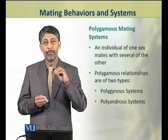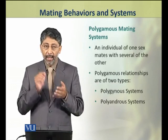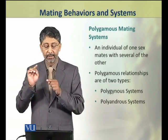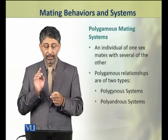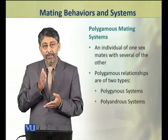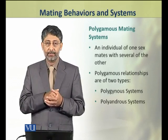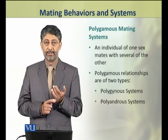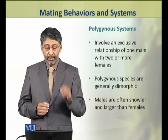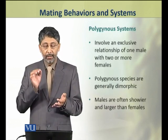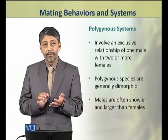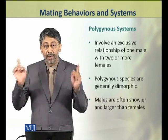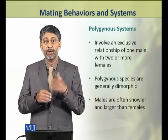In a polygamous mating system, an individual of one sex mates with several of the other. Polygamous relationships are of two types: polygynous system and polyandrous system. In a polygynous system, there is an exclusive relationship of one male with several females, which may be two or more.